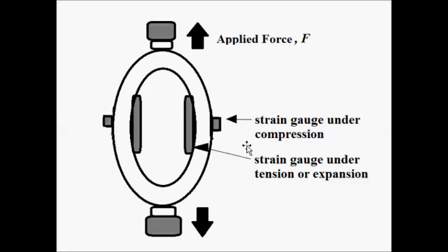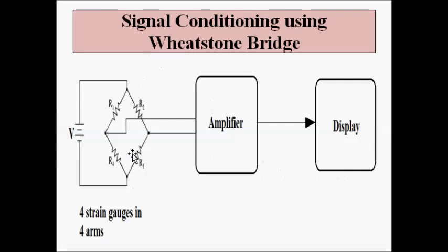To convert these changes in strain into a suitable voltage or current signal, we take help of a signal conditioning circuit — a Wheatstone bridge. The four strain gauges are connected in the four arms of the Wheatstone bridge so that we get an output voltage, which is amplified and fed to a display unit.